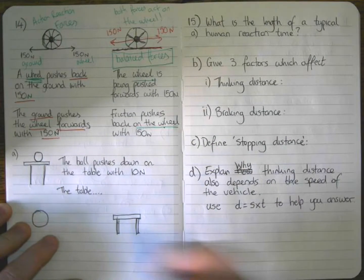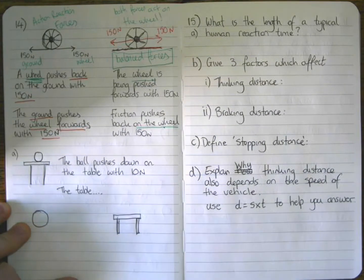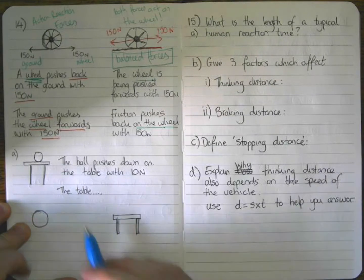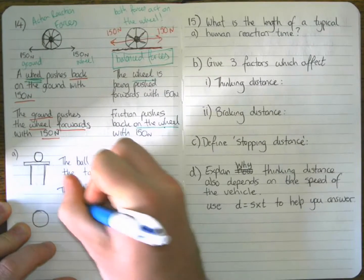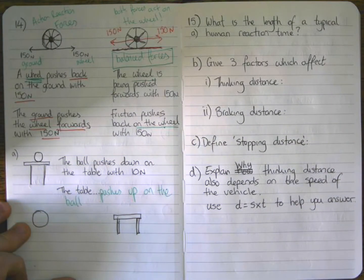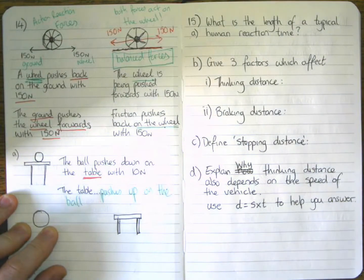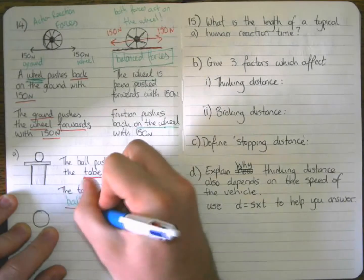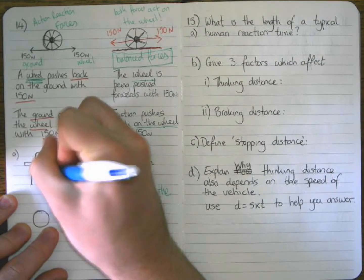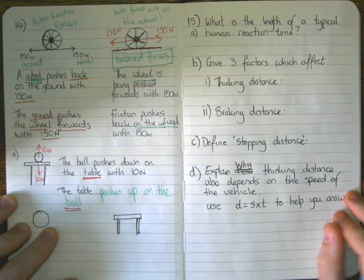Let's apply this: the ball pushes down on the table with ten Newtons — that means the table pushes up on the ball with ten Newtons. Is that balanced forces or an action-reaction pair? Think about what the forces are acting on. The ball pushes down on the table — so that force acts on the table. The table pushes up on the ball — that force acts on the ball.